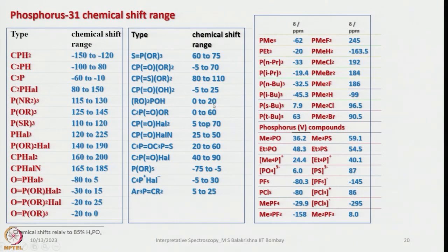³¹P NMR is very useful for studying reactions and reaction mechanisms, especially when using phosphines in homogeneous catalysis for organic transformations. It has 100% natural abundance, so a reasonable quantity of sample is sufficient, and there is no need to use deuterated solvents. Very distinct chemical shifts exist for P³, P⁵, various phosphonides, chlorophosphines, etc. Donor and acceptor properties can be analyzed simply by looking at the chemical shift positions.